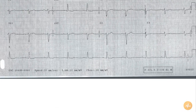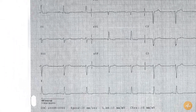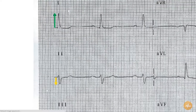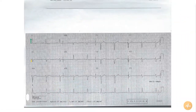The rate is 60 beats per minute. The patient is in normal sinus rhythm. The axis is deviated to the left with an upwards complex in lead 1 and a downwards complex in lead 2. The P waves appear normal.